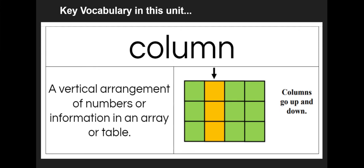We also learned the word column. Columns go up and down. That is a vertical arrangement of numbers or information in an array or table. If you look at the picture, the yellow column goes up and down. And there's also three columns of green.